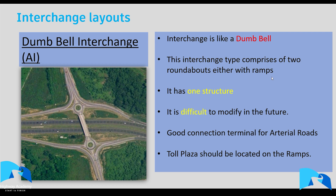The first interchange type is the dumbbell interchange, which looks like a dumbbell — the kind used in the gym. It comprises two roundabouts, one on either side, with normally one bridge structure running between them. The challenge is it's very difficult to modify in the future. People often switch between a dumbbell and a diamond, making it signalized or reverting to roundabouts if signals fail.